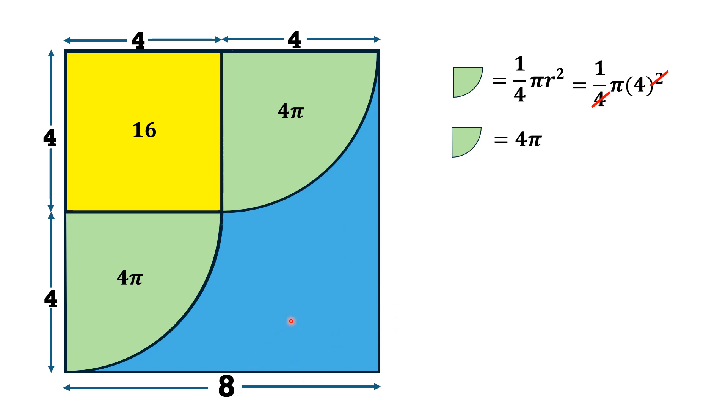Now, if we find the area of this blue shaded region, it is equal to the area of this large square minus this quarter circle minus this yellow square and minus this quarter circle.